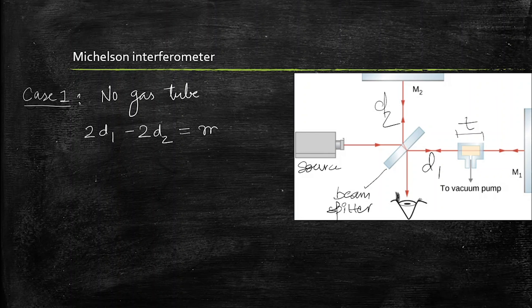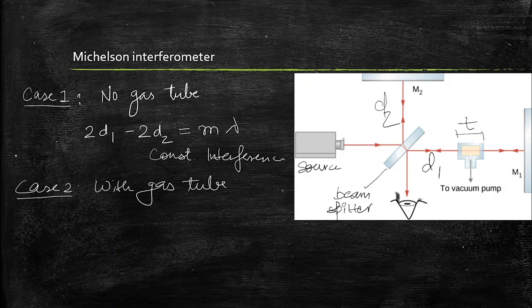So this is the condition for constructive interference. Similarly in case 2 we will be having gas tube in the horizontal path, to the horizontal path of the ray, so the path taken horizontally will become twice D1.